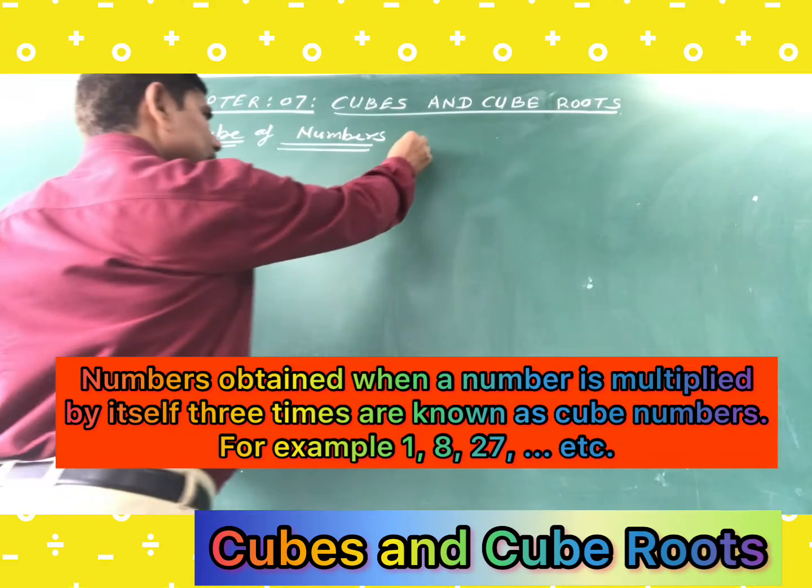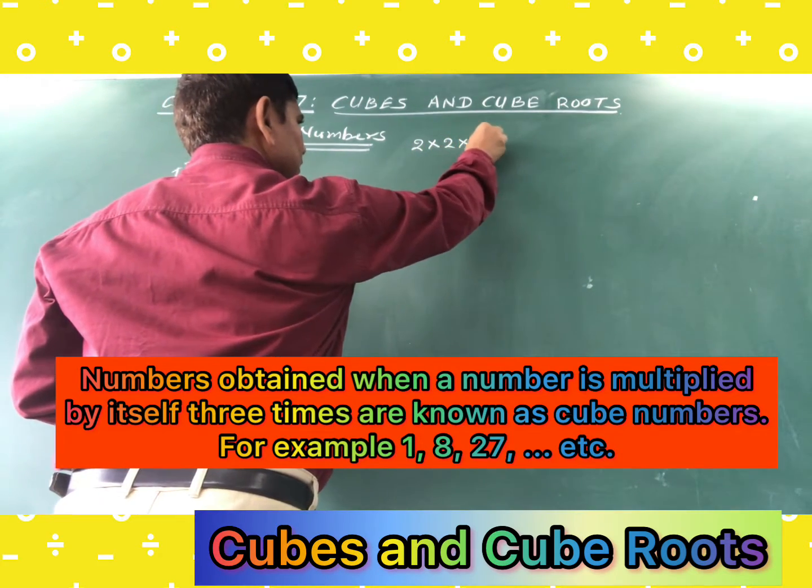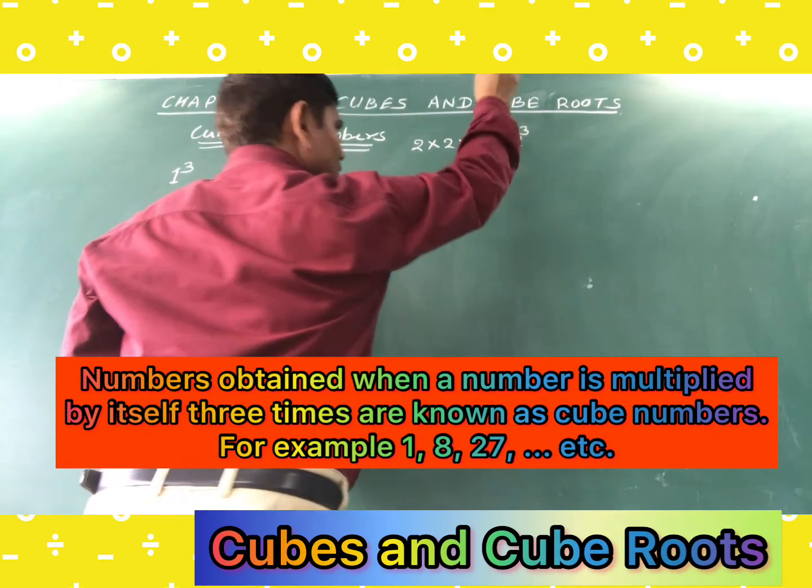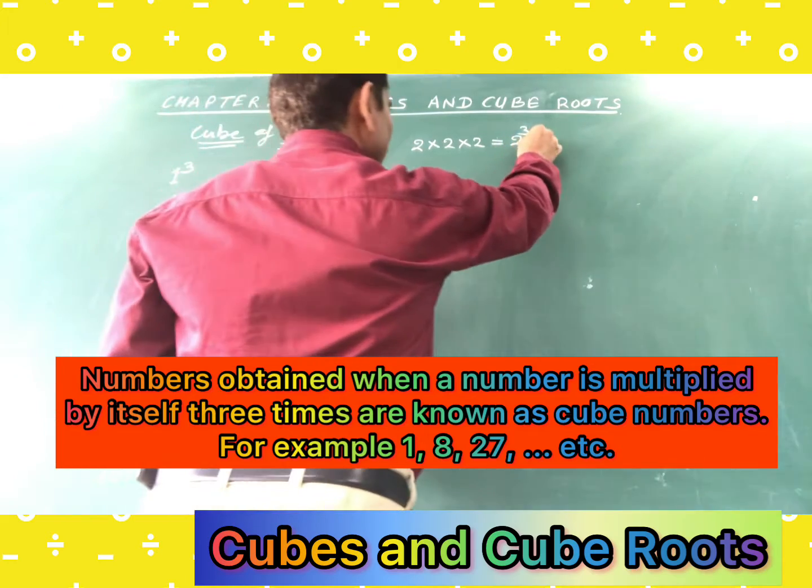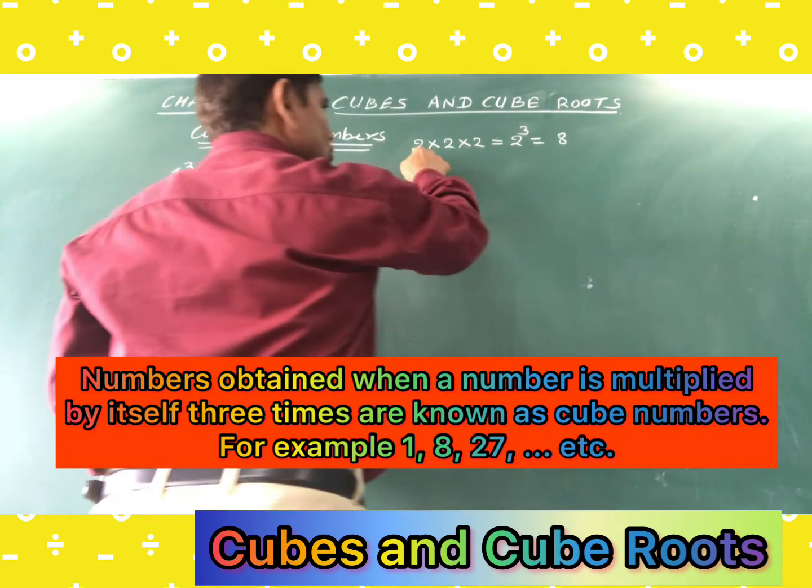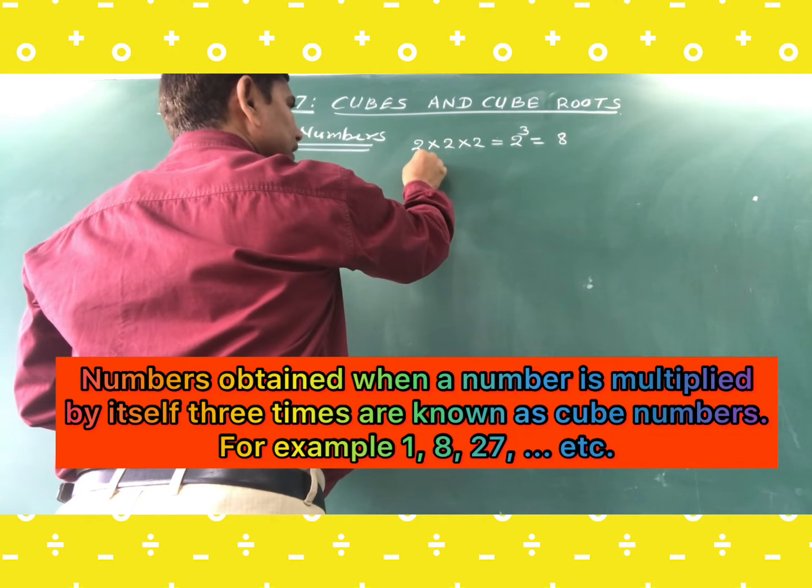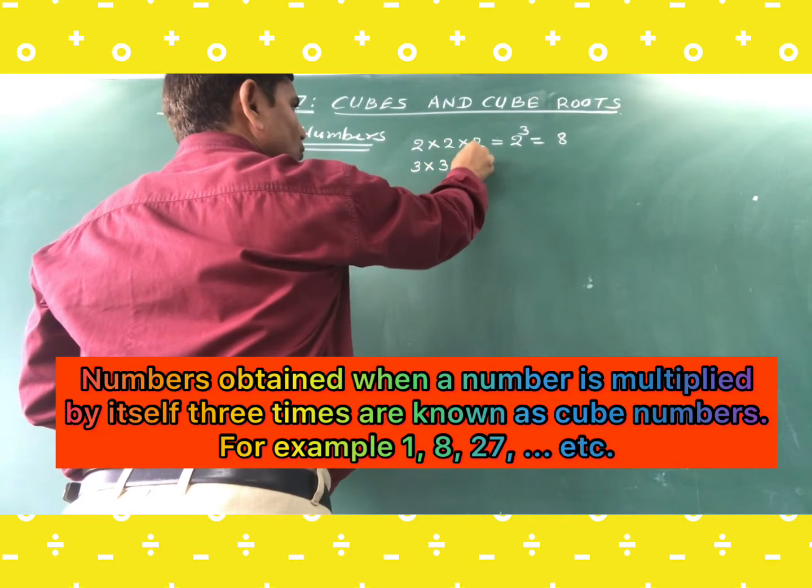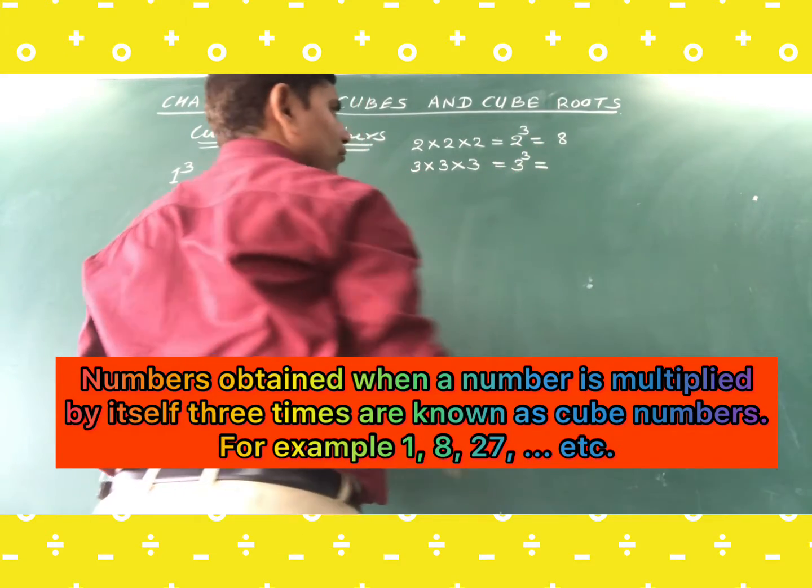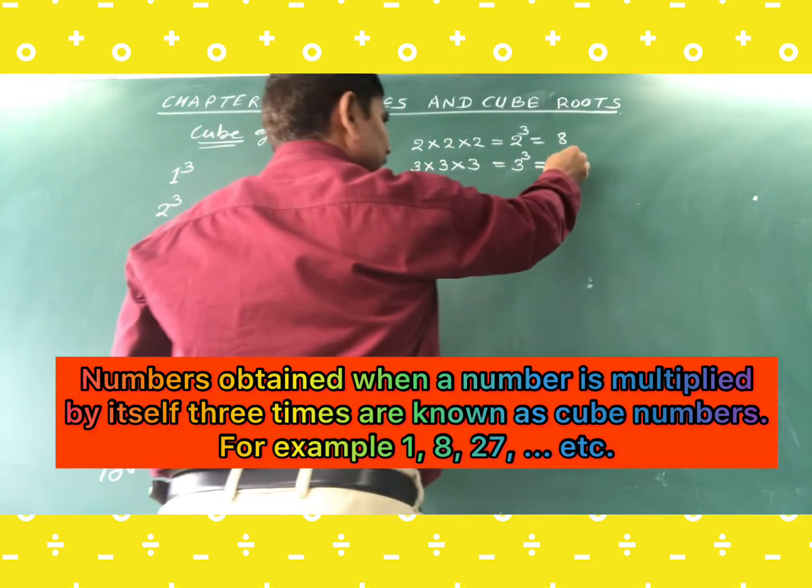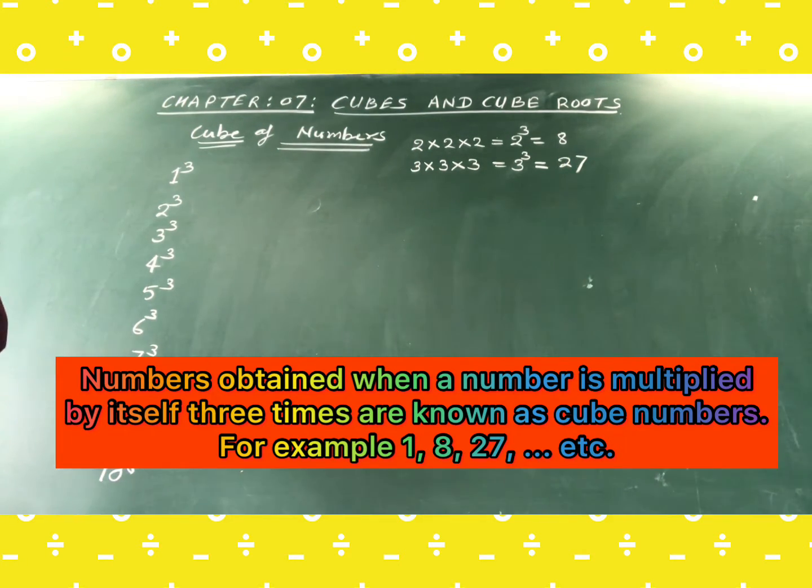For example, 2 multiplied 3 times, then you will indicate it as 2 raised to the power of 3, and the value is 8, because 2 times 2 is 4 times 2 is 8. And again, if you multiply 3 three times, then you can write it as 3 raised to the power of 3, and the value is 27.